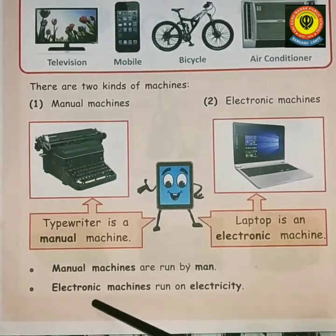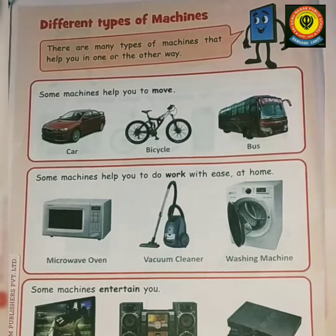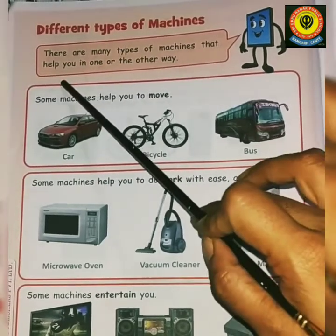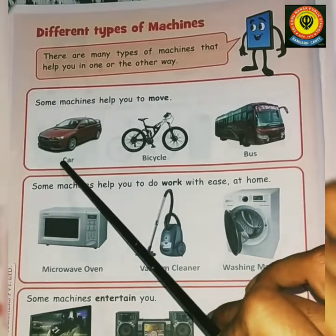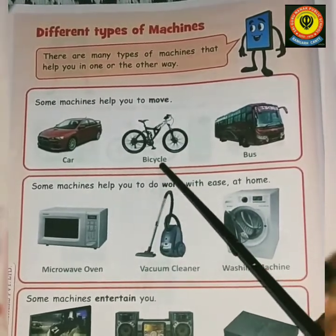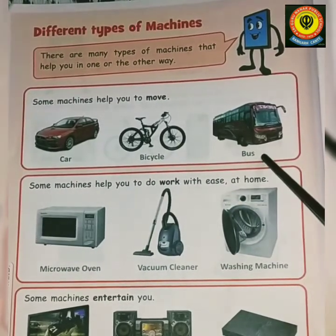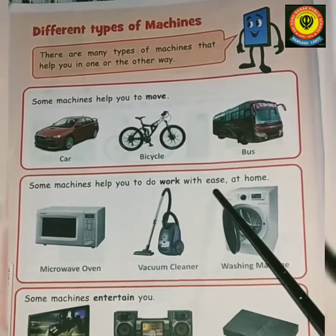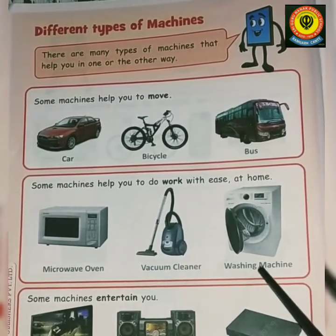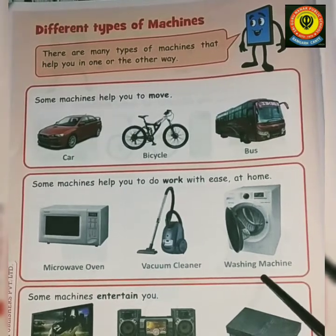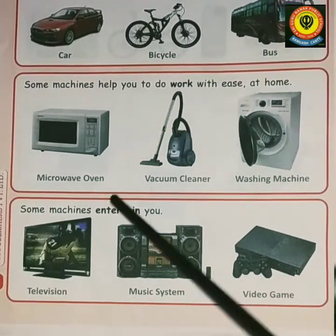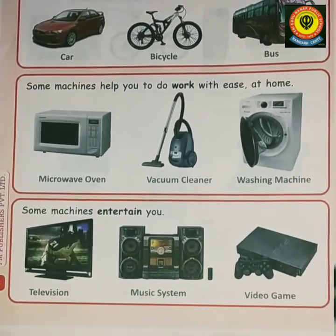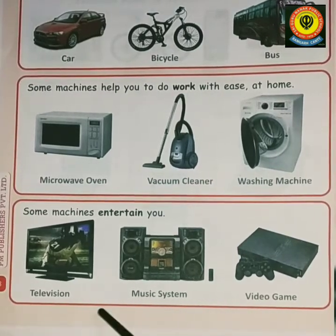Manual machines are run by man; electronic machines run on electricity. There are many types of machines that help you in different ways. Some machines help you to move, like a car, bicycle, or bus — they help you reach your destination fast. Some machines help you work with ease at home, like a microwave oven, vacuum cleaner, and washing machine. Other machines entertain you, like television, music systems, video cameras, and phones.